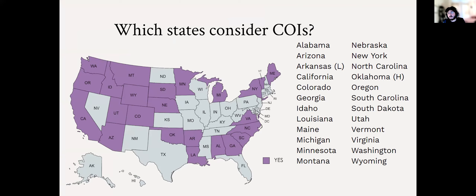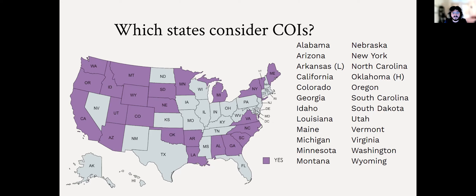These states do consider COIs, either through their constitution or through whatever independent body is currently involved with redistricting. Some examples include Michigan and Arizona. In their constitutions, it states communities of interest very explicitly, although in different capacities. Michigan talks about communities of interest very in-depth, whereas Arizona is very concise, having it in about one sentence.